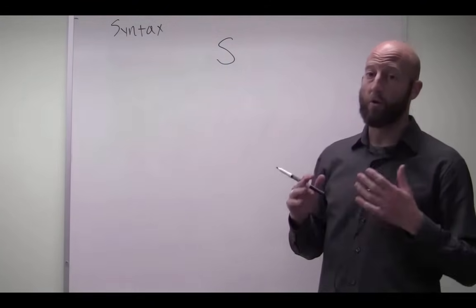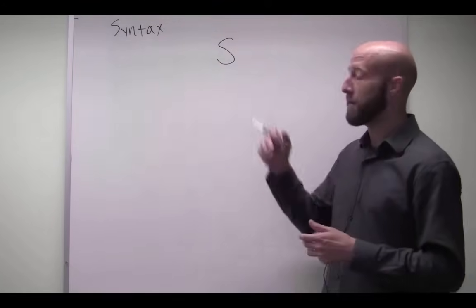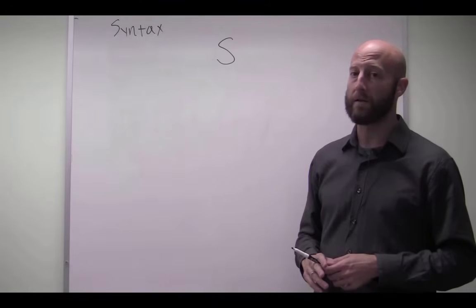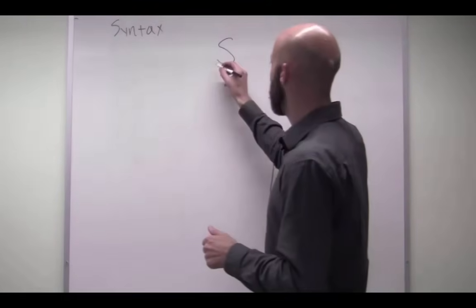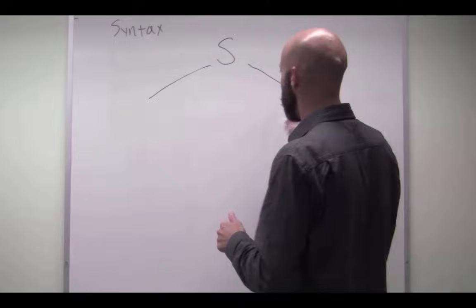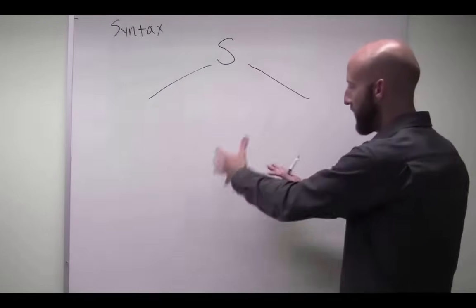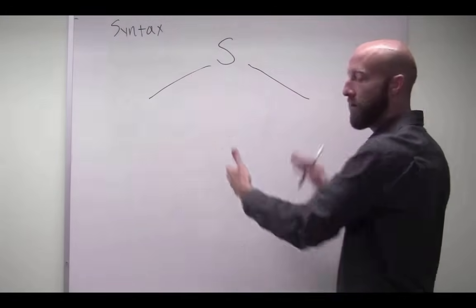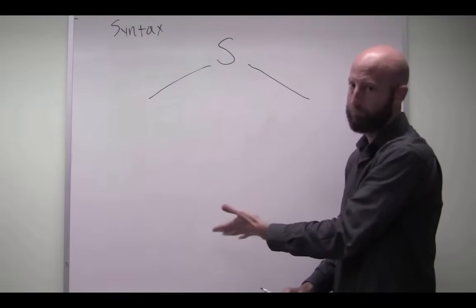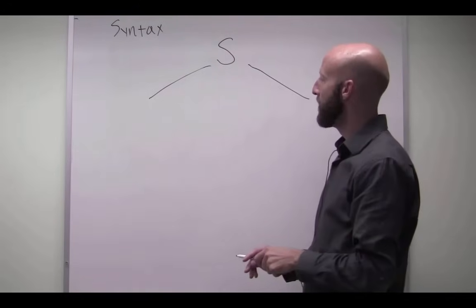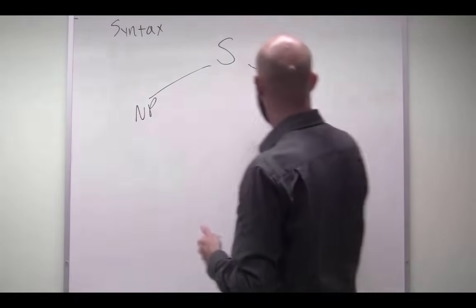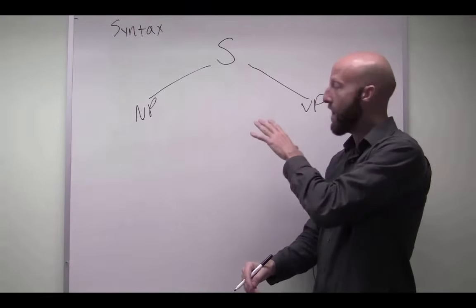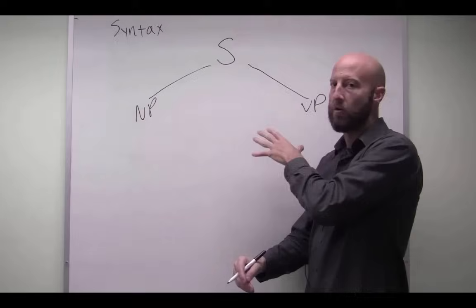So remember our old phrase structure rule in English that a sentence minimally consists of a noun phrase and a verb phrase in that order. So it's always useful to give yourself a lot of space when you're drawing these tree structures because things become cluttered down here. So the more space you give yourself up here, the easier it is down here. So we have a noun phrase and a verb phrase. So all tree structures that you're asked to draw in this class, they're going to start like this.